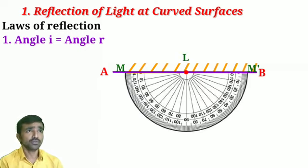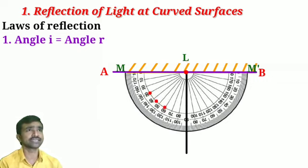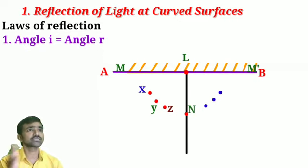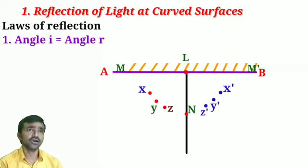Now place the protractor as shown on screen and identify the angles: 30 degrees, 45 degrees, 60 degrees, and 90 degrees. You already have the 90-degree line. On the left side, identify the top points and name them X, Y, Z, and N for the 90-degree line. On the right side, name them X dash, Y dash, Z dash, and so on.